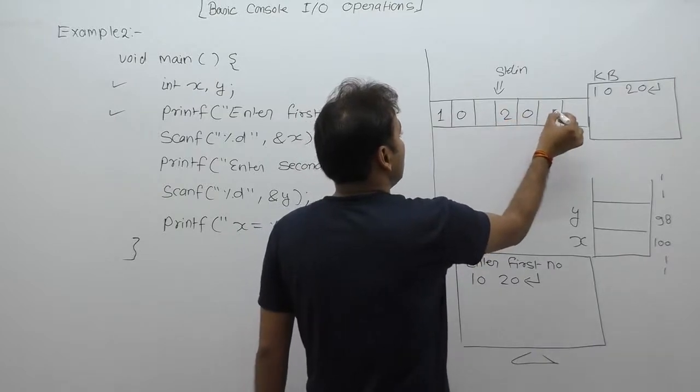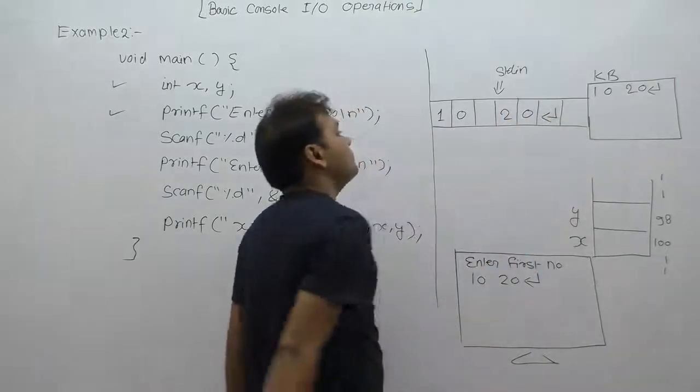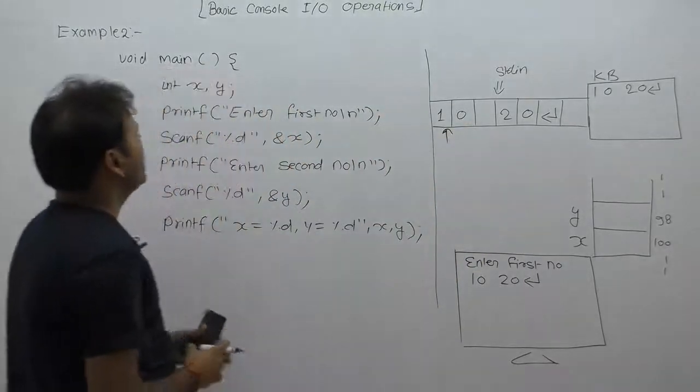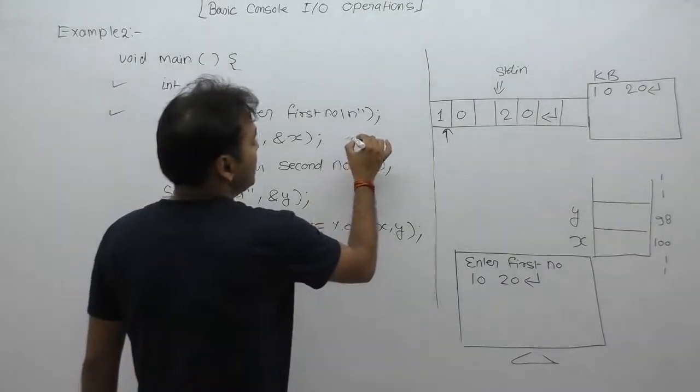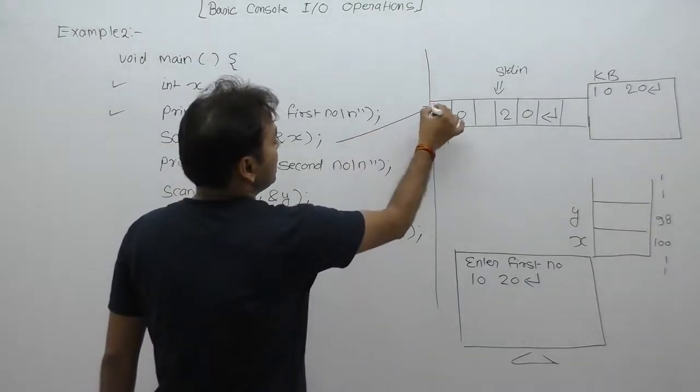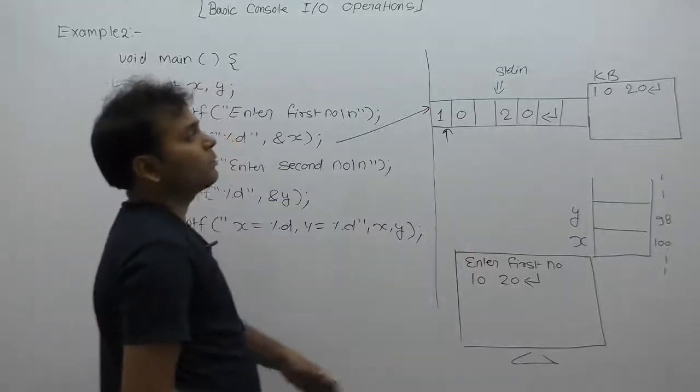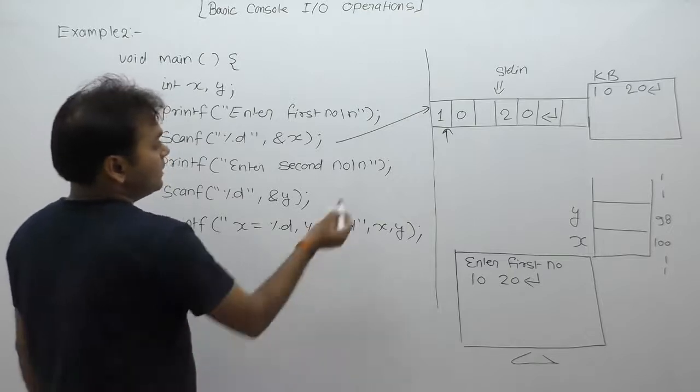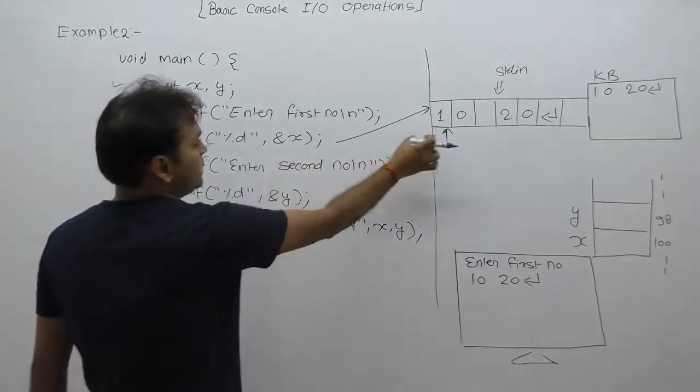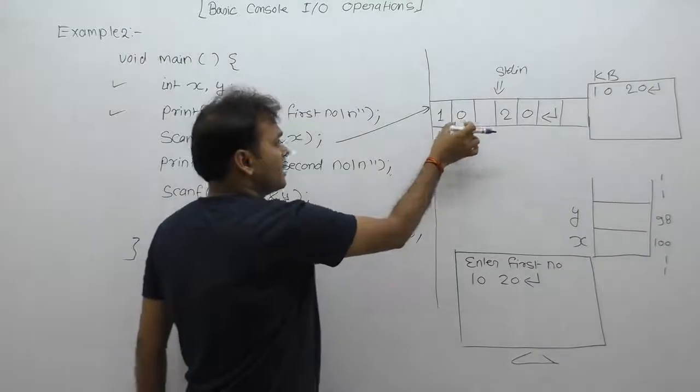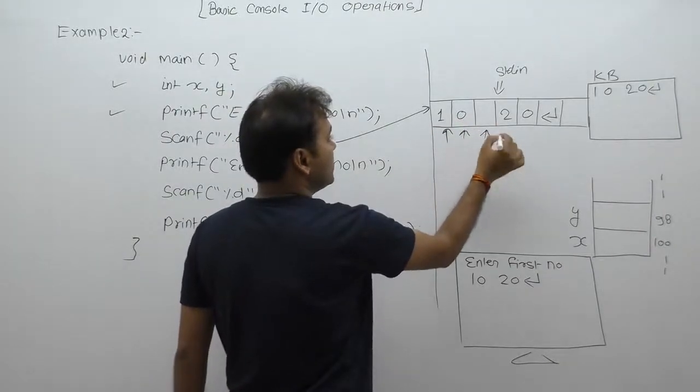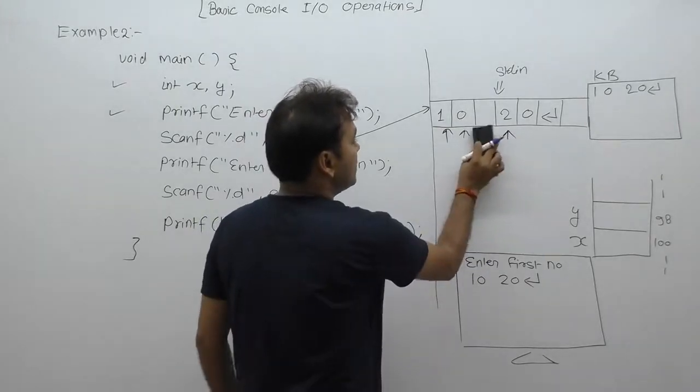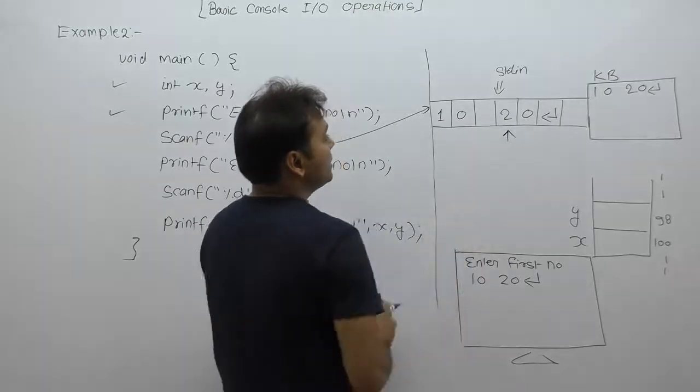Therefore here we are stored ASCII value of 1, ASCII value of 0, space 20, then enter key like that. Initially cursor bar is pointing first. The scanf function ASCII value, scanf function immediately single integer number read from standard input called stdin. Here we are pressing 1 0 already, only 1 0 already. First case 1 0 read it, ASCII value of 1 and 0.